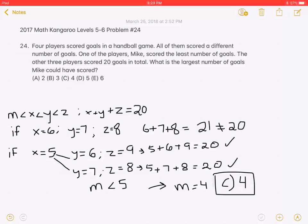M is less than X, which is less than Y, which is less than Z. And the sum of X plus Y plus Z is equal to 20.